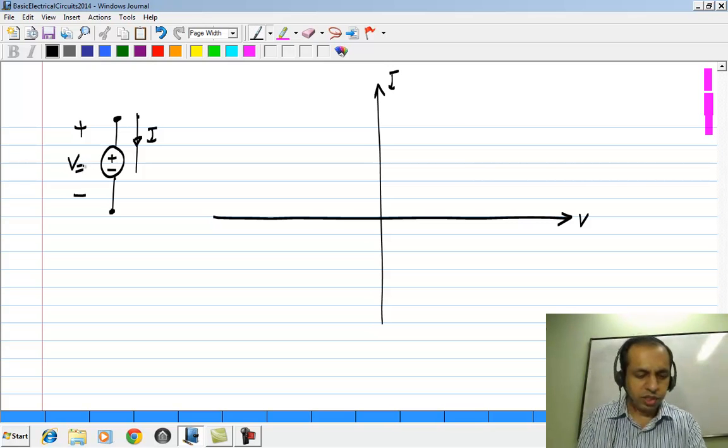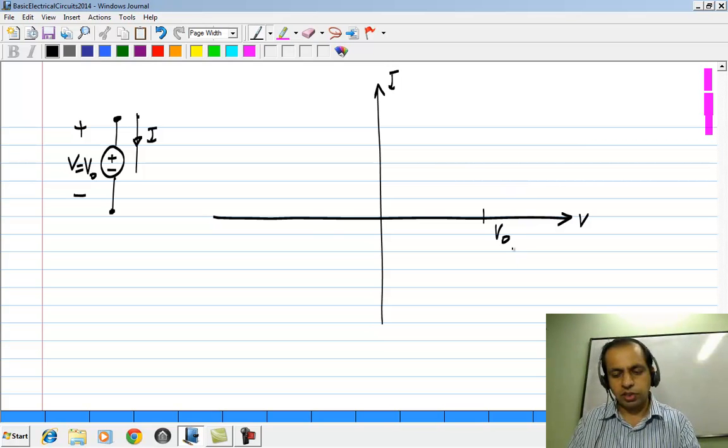Let us say this V is given to be some V naught and V naught happens to be positive, the characteristic will look like this. What does it say? V is always equals V naught. That means that the characteristic is a vertical line like this.